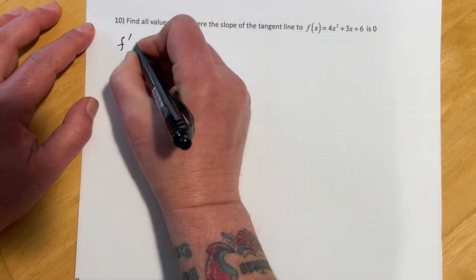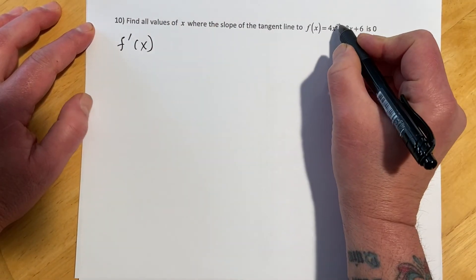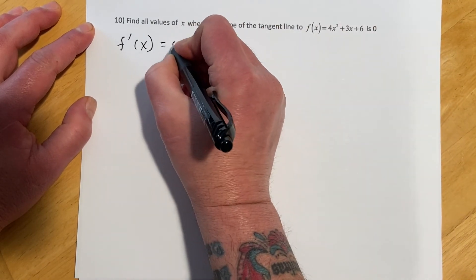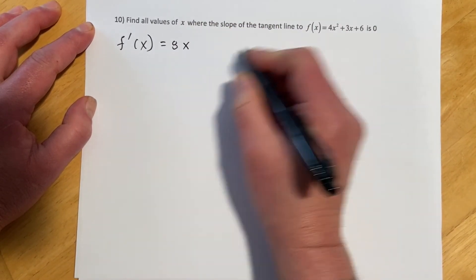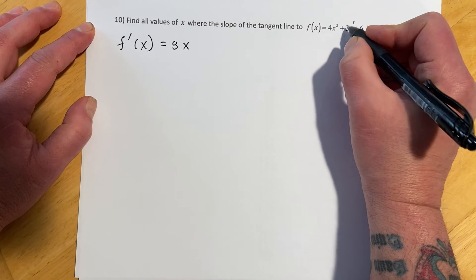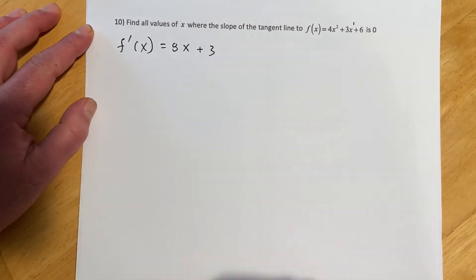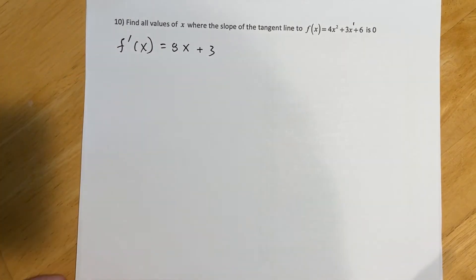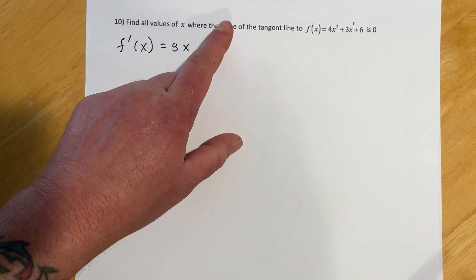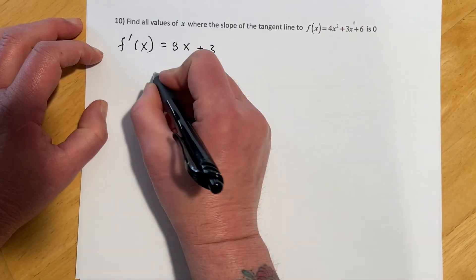So we will find f prime of x. So right here I'm just going to go 2 times 4 is 8x, and then that's a little invisible 1 times 3 makes plus 3, and then take off 1, and then the x drops out because it's x to the 0.